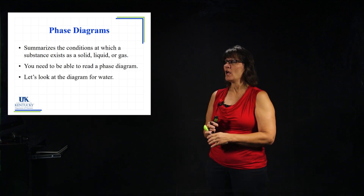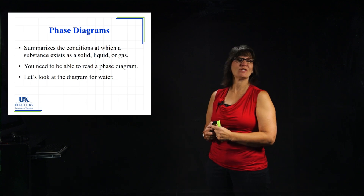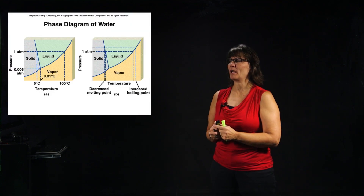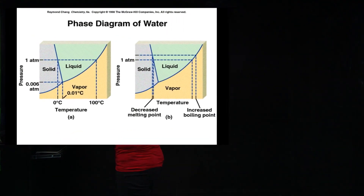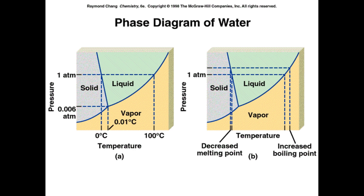We're going to start with water, which seems to be our favorite substance for this chapter. Looking at the phase diagram of water, the first feature we see is the solid state at the lowest temperatures, then the liquid state as temperature rises, and continuing to rise you get into the gas phase — water vapor. Those are the three phases.